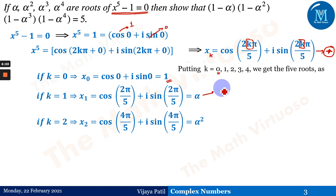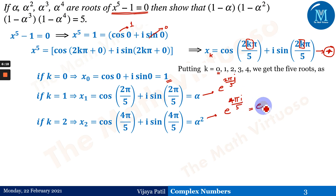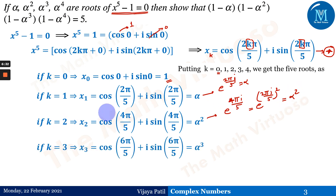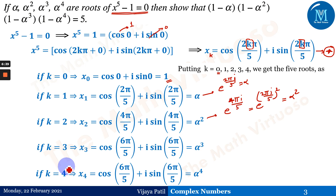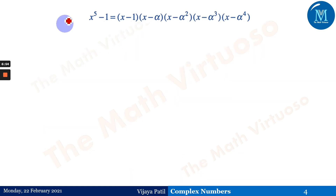Similarly, x₃ = cos(6π/5) = α³, and x₄ = cos(8π/5) = α⁴. Therefore x⁵ − 1 = (x − 1)(x − α)(x − α²)(x − α³)(x − α⁴), which is simply the product of all the root brackets. We also know the identity: x^n − 1 = (x − 1)(x^(n−1) + x^(n−2) + ... + 1).